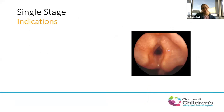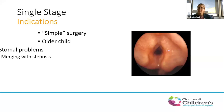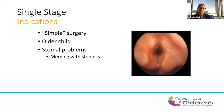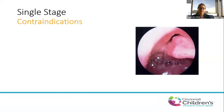LTR can be done as a single stage or double stage procedure. Single stage means the child either had no trach to begin with and leaves without one, or had a tracheostomy and leaves without it. This is indicated for simpler, lower-grade stenosis, often in older children, or when stoma problems are the main obstruction. It's particularly useful for lower grade subglottic stenosis, and is not limited to subglottic stenosis, but that's where it's most useful.